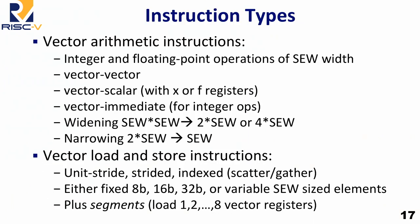There are a lot of vector instructions. The basic types include integer and floating-point operations: vector-vector, vector-scalar (where the scalar comes from an X or F register), and vector-immediate for integer operations. There are widening operations that take two elements of one width and produce something twice as wide — we're also looking at four times the width — and narrowing operations that reduce a double-wide value down to single width, useful for example with fixed-point accumulators. Load and stores support unit-stride, strided, and indexed access, with element sizes being fixed 8-bit, 16-bit, or 32-bit values in the least significant bits, or SEW-sized elements fitting the current configured size.